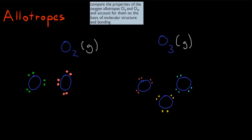Before I cover this dot point in a bit more detail, I want to go over the word which pops up here first in this dot point, which is allotrope. So you need to know what an allotrope is, because you basically need to know every single word that comes in dot points, and allotrope is one of them.